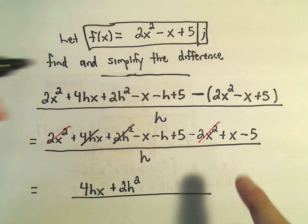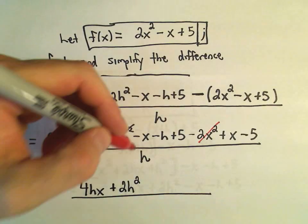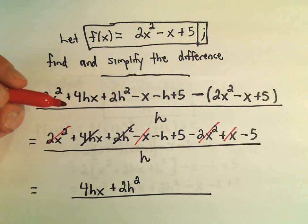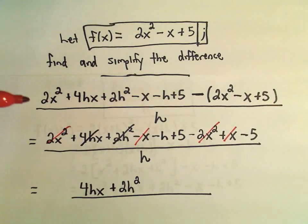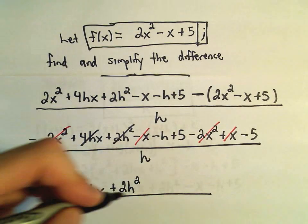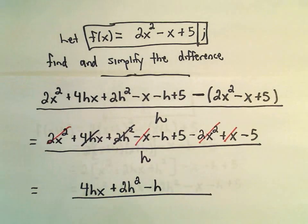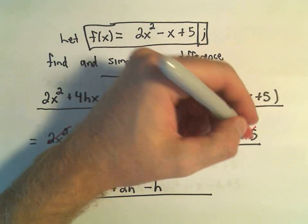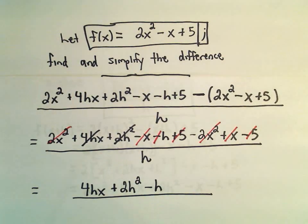We've got a negative x and a positive x. So the negative x and the positive x would just cancel out. We've got a negative h, but I don't see any other just h's in there. So I'm going to write him down. And then notice we have a positive 5 and a negative 5. So that also cancels out.